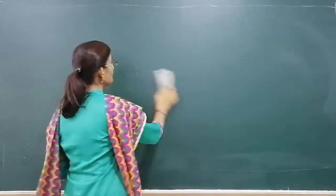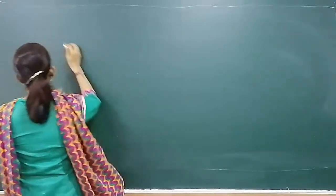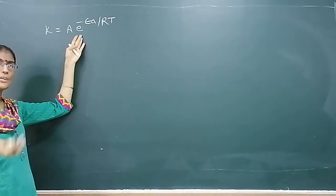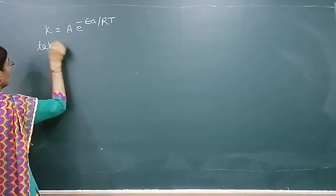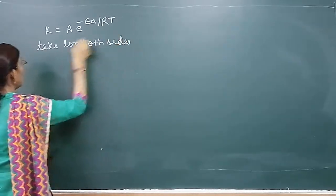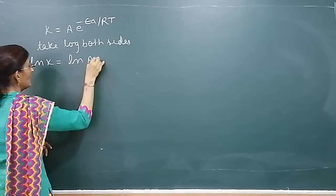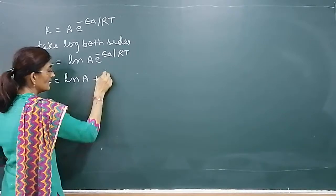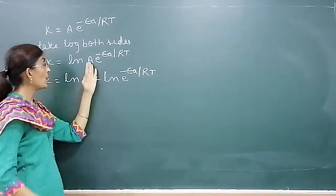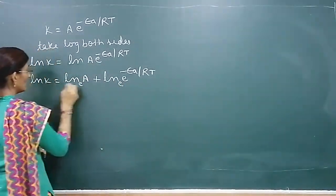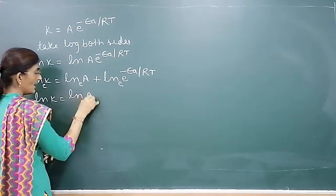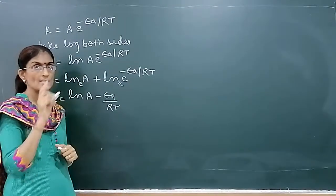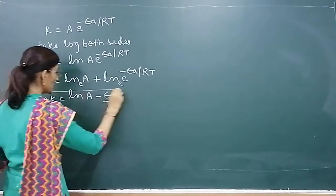Now we will solve the Arrhenius equation. For numerical purpose, the Arrhenius equation is k = A × e^(−Ea/RT). In order to solve this, since it is exponential, convert it into logarithm - take log on both sides. So ln k equals ln A plus ln e^(−Ea/RT), which gives ln k = ln A − Ea/RT, since ln e = 1. This is called the Arrhenius equation in logarithmic form.